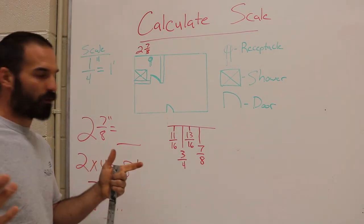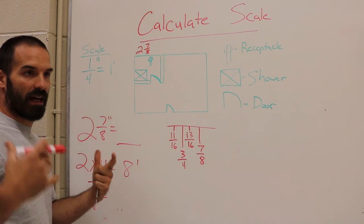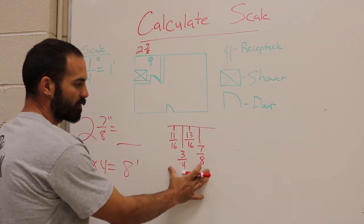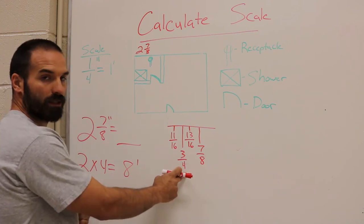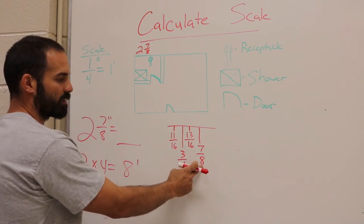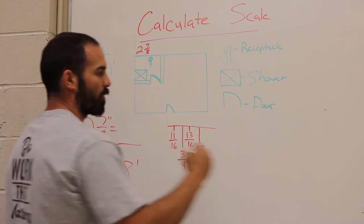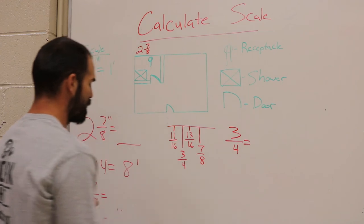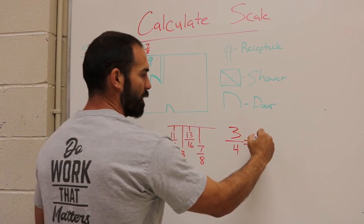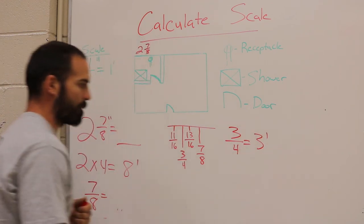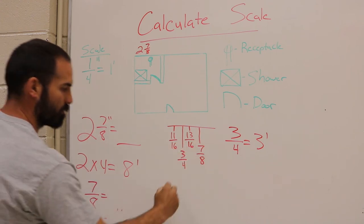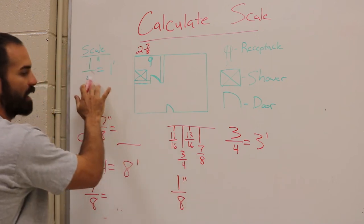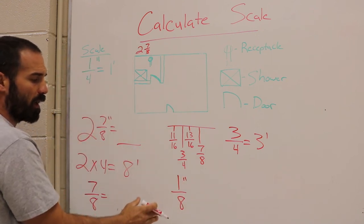So there's a couple different ways you can do this. This is the easiest way that I have found for my brain. Everybody's brain works a little bit differently, but this is the easiest way for me. What I do is I find the nearest quarter inch, and the nearest quarter inch to 7/8 is 3/4. So we know that 3/4 in scale is going to be 3 feet because a quarter of an inch equals a foot. So we got 3 feet. We still have an eighth of an inch left over.